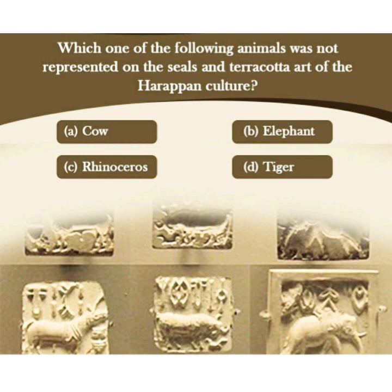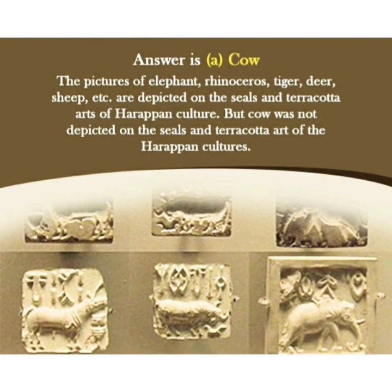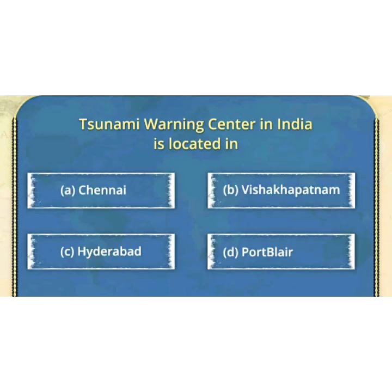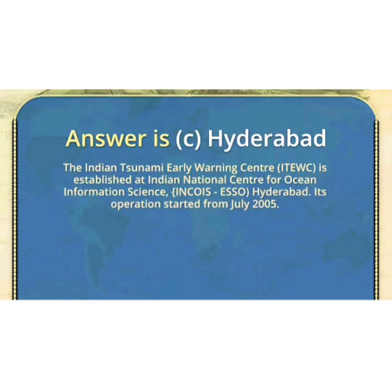Now some history questions: which one of the following animals was not represented on the seals and terracotta art of the Harappan culture? The right answer is option A — cow. Please read the details below. Next: the tsunami warning center in India is located in — the right answer is option C, Hyderabad.